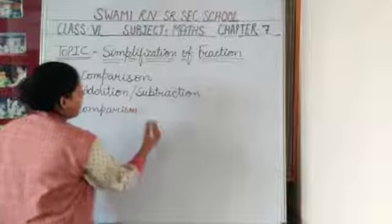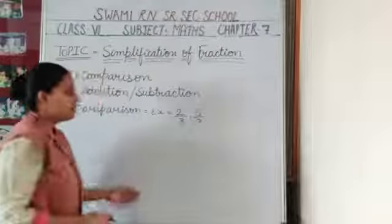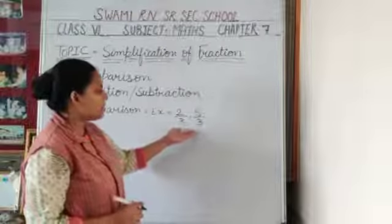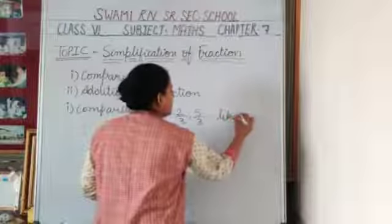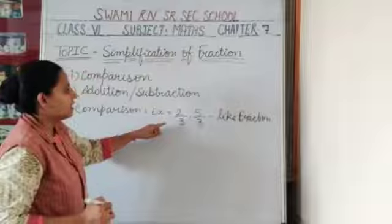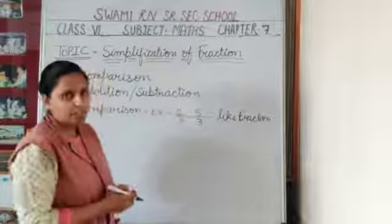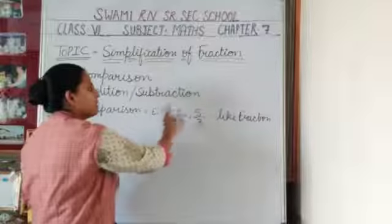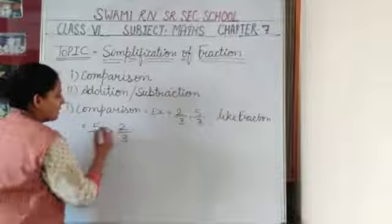In the comparison, I write an example here: 2 upon 3 and 5 upon 3. First I observe that in this example the denominators are the same. This type of fraction is called a like fraction — like fractions means which denominators are same. In like fractions the denominators are same, so we check the numerator. The numerators are 2 and 5. Which one is greater? 5 is greater than 2, so 5 upon 3 is greater than 2 upon 3.